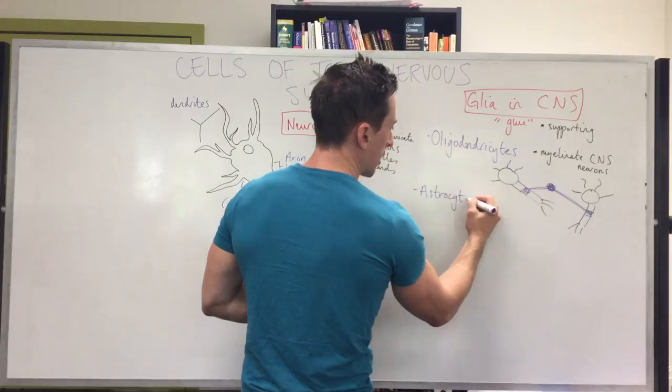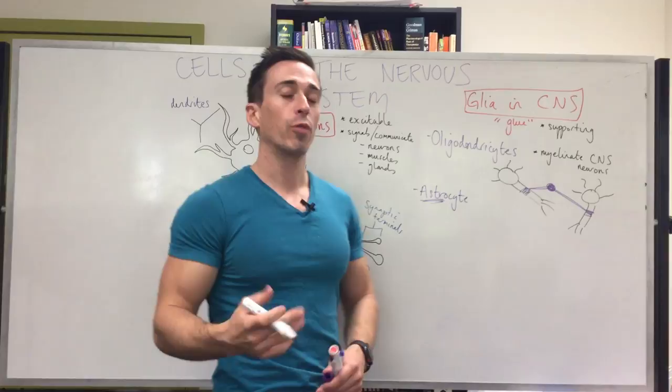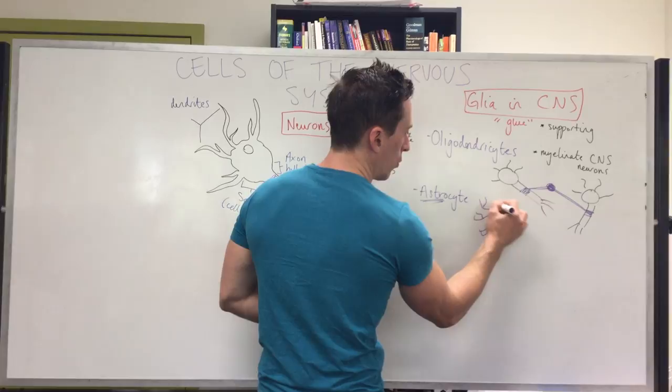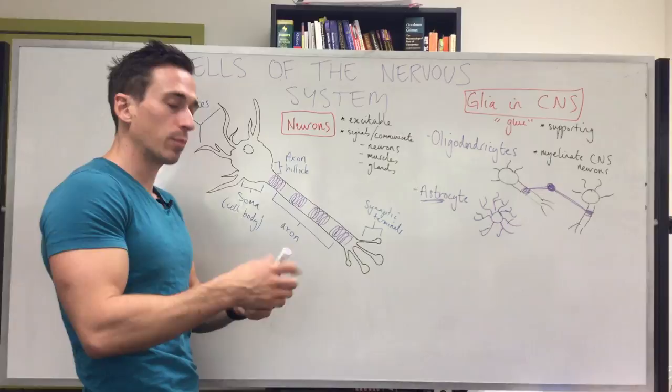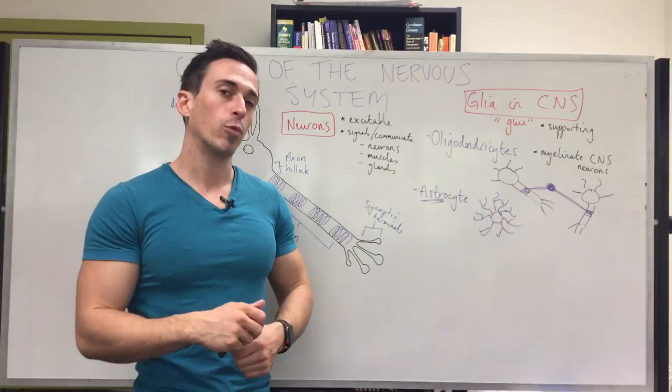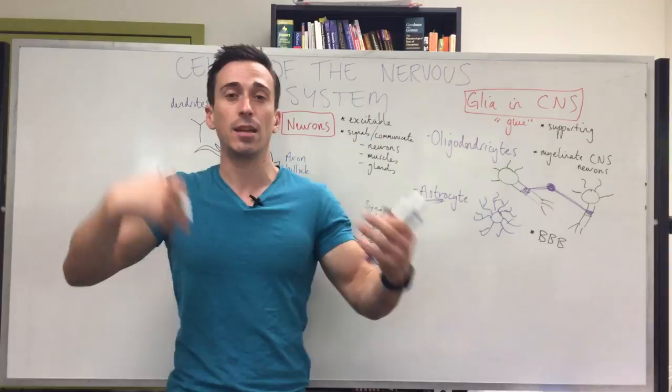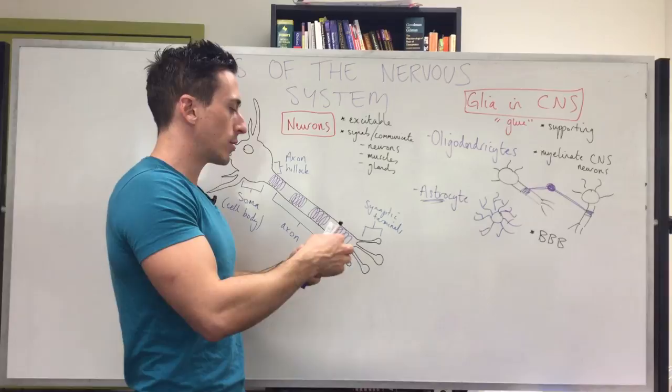Another type of glia within the central nervous system are astrocytes. Astro refers to star, and these astrocytes look like stars — the soma has many arms projecting off it. Astrocytes play a couple of different roles: one is to maintain the environment surrounding the neurons, and another important role is involvement in the blood-brain barrier, helping regulate what does and does not pass from the systemic circulation into the bloodstream supplying the brain.